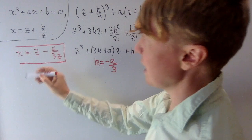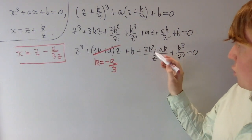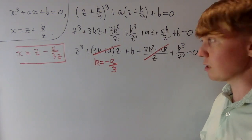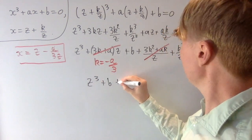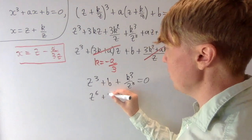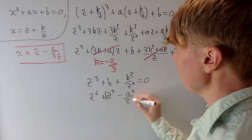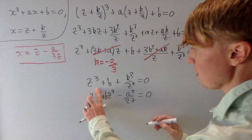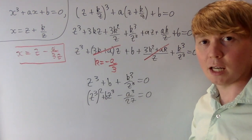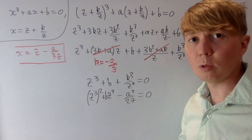With k equals minus a over 3, the substitution is x equals z minus a over 3z. Crucially, substituting k equals minus a over 3 into 3k squared plus ak also makes that term vanish. So we're left with z cubed plus b plus k cubed over z cubed equals 0. Multiplying by z cubed gives z to the 6 plus bz cubed minus a cubed over 27 equals 0. Writing z to the 6 as (z cubed) squared, this is a quadratic we can solve for z cubed, then find z, then find x.